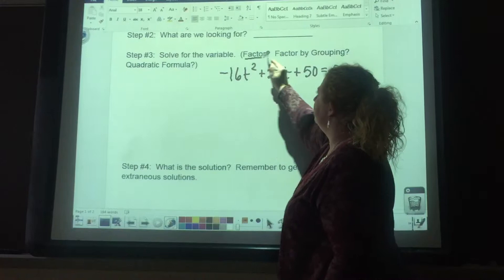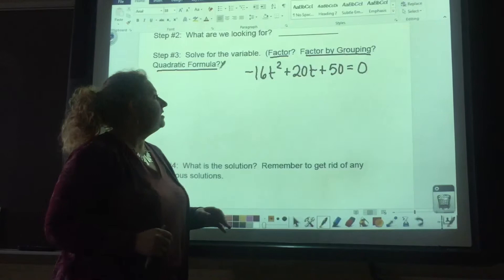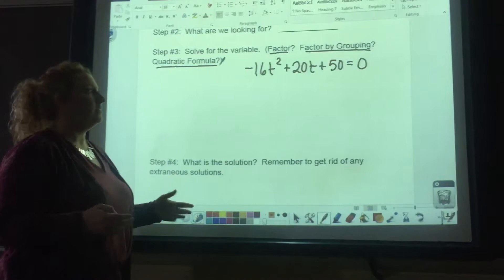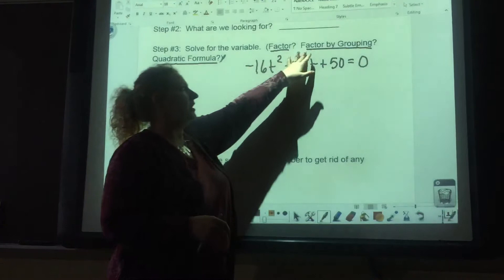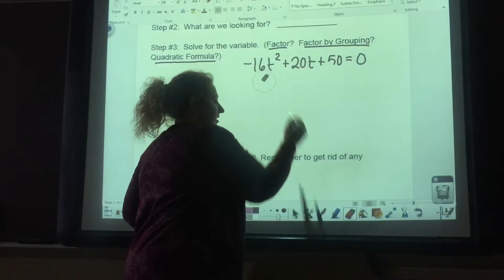We have factoring, factor by grouping, and quadratic formula. If we go through our questioning techniques, our first question is, is the leading coefficient a 1? The answer is no. The second question is, can we take this leading coefficient of negative 16 and divide it evenly through the problem? Again, the answer is no. So you have two choices: factor by grouping or quadratic formula. If you do factor by grouping, you're going to have to figure out what multiplies together to give us this really large number and adds up to 20. Honestly, my brain is not willing to think that hard, so I'm going to use the quadratic formula.